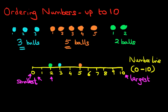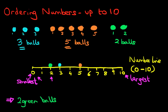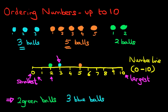Now let's write this down over here. So we're going to write these down in order. The smallest group is two green balls. After that it is the blue balls — one after that is three blue balls. And lastly we have the orange balls, and they are five orange balls.